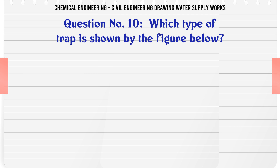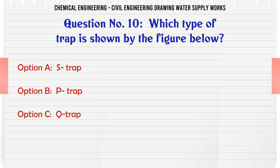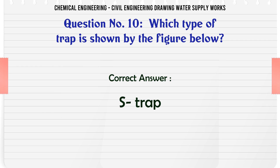Which type of trap is shown by the figure below? A. S. Trap, B. P. Trap, C. Q. Trap, D. R. Trap. The correct answer is S. Trap.